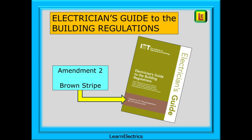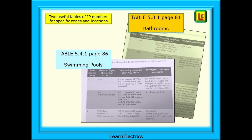Some domestic electricians will have a copy of the electricians' guide to the building regulations, but a lot of the information it contains is also relevant to commercial and industrial premises, especially the tables on cable lengths, breaker sizes, and ZS measurements. But more on this in another video. The book we use here has a brown stripe across the front cover to show it is updated to Amendment 2. If you have the book, take a look at pages 81 and 86.